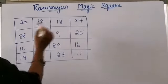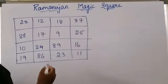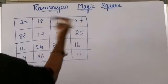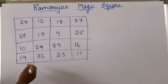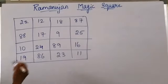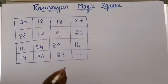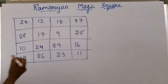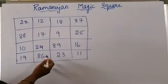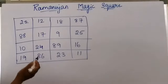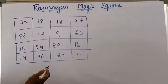This is a special square called Ramanujan's Magic Square, invented by our great Indian mathematician S. Ramanujan. What made this square so special? I will explain to you now.